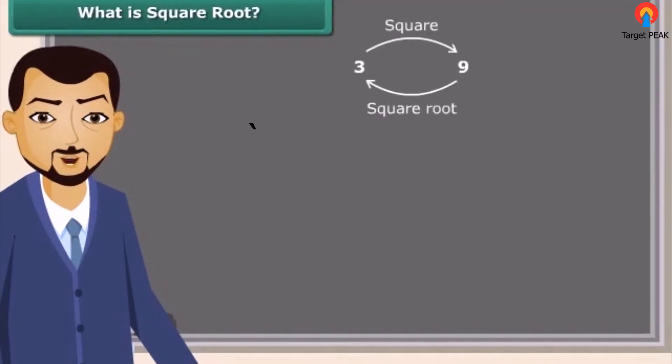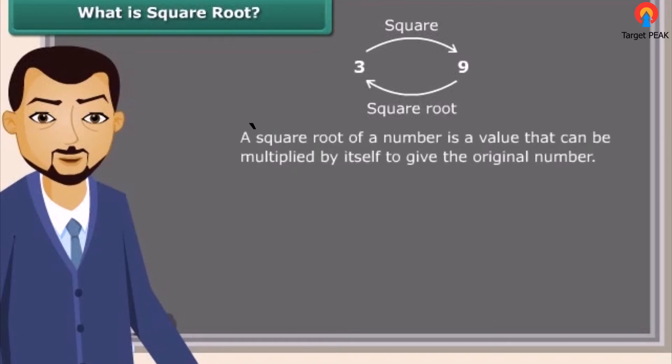Square root is an inverse operation of squaring. It is a value that can be multiplied by itself to give the original number. So, we can say when 4 is multiplied by 4 we get 16, which means 4 is a square root of 16. Square root is represented by a special symbol. It is called the radical. We can use it like this: square root of 25 is 5.